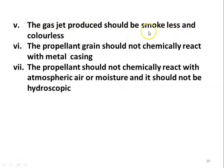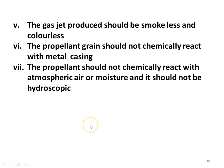The gas jet produced should be smokeless and colorless, meaning effective combustion inside the combustion chamber. The propellant grain should not chemically react with the metal casing — that is why we have a lining material. The propellant should not react with atmospheric air or moisture, and it should not be hygroscopic. During processing — grinding, mixing, and casting — it should not absorb moisture from the atmospheric air. These are the desirable properties of the propellant used in the solid propellant rocket.